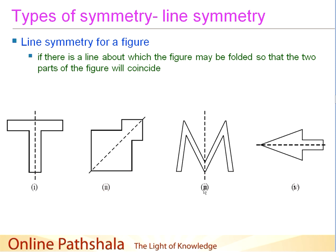The third example uses the letter M, and the vertical line through the middle is its line of symmetry — folding one half over the other gives you just half of M. The fourth example is an arrow with a horizontal line dividing it into two parts. Folding the upper part along this line of symmetry gives just half of the arrow. All four figures exhibit line symmetry, and we identified the lines of symmetry for each.